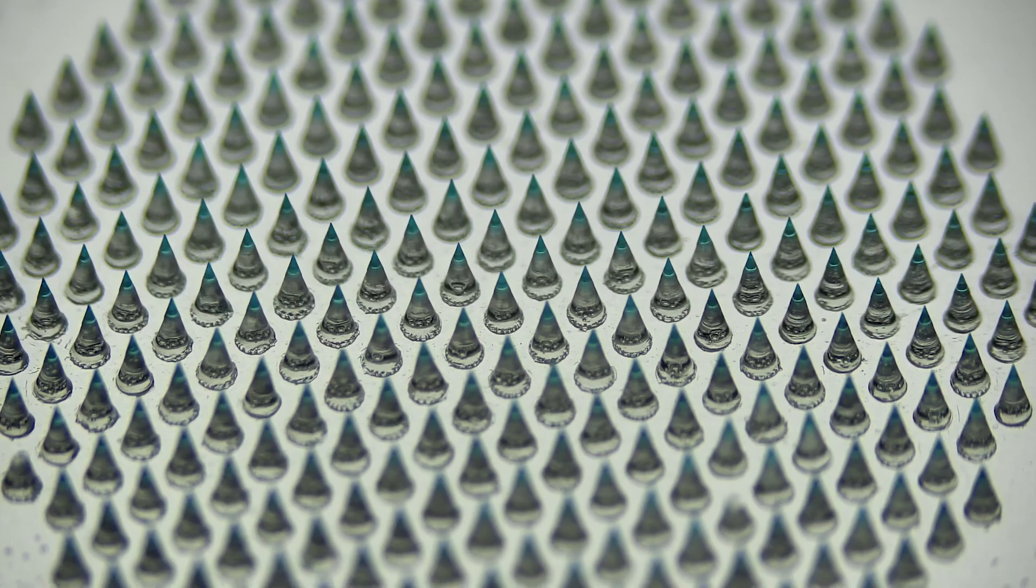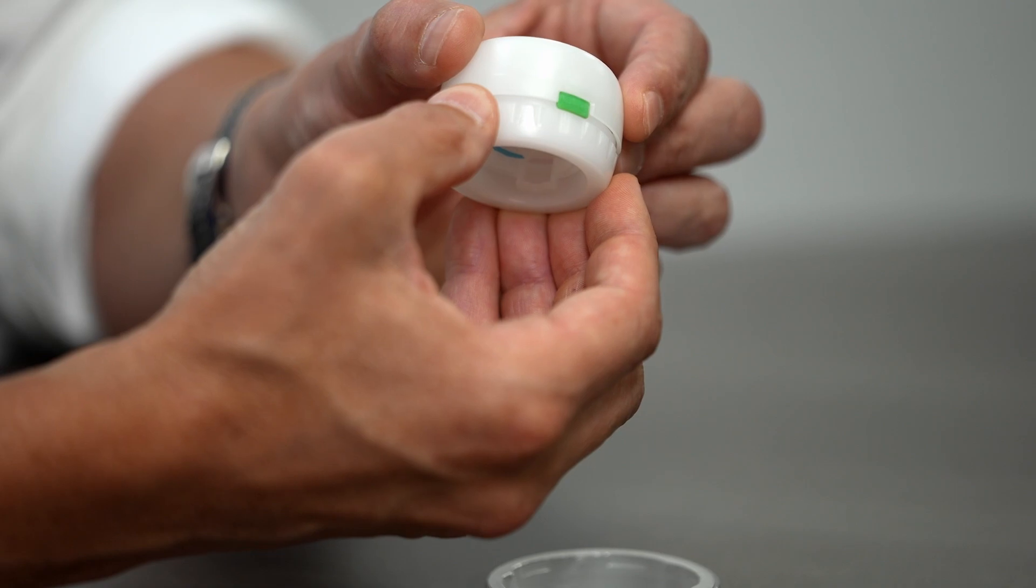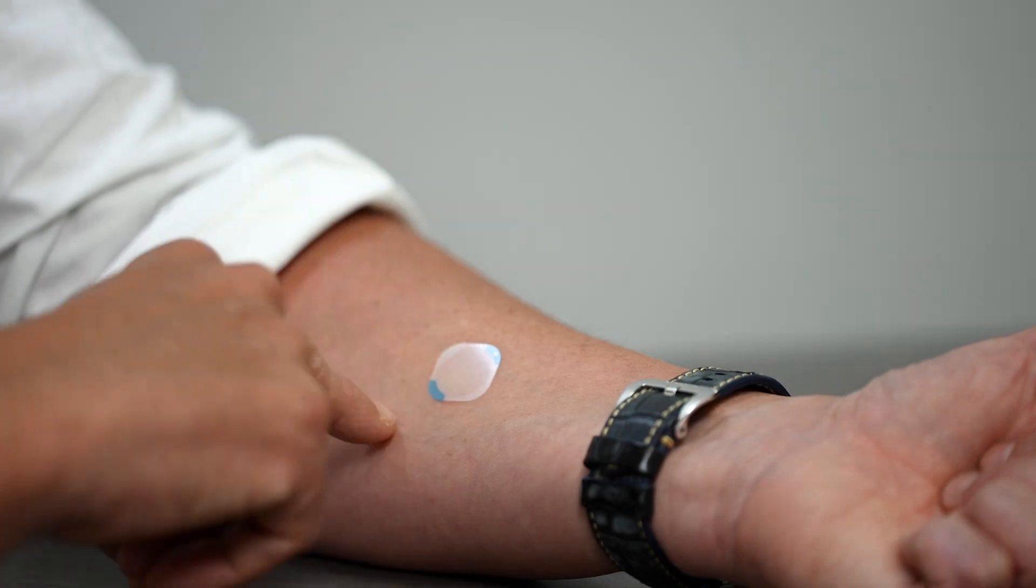The map is pre-loaded onto the applicator. The user would then rotate the system to expose the green flag, position it against the skin, press it, and it leaves the map backing behind, which five minutes later you remove, and that's your treatment.